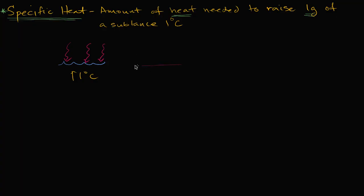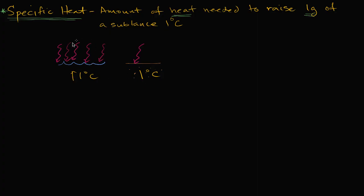Let's say this is sand right over here. If I want to raise that one degree Celsius, I would need a different amount. It actually turns out that I need less heat to raise the sand one degree Celsius than I need to raise the temperature of one gram of water one degree Celsius. So let's say this is a gram of water, and this is a gram of sand — I'm going to need more heat to raise the water one degree Celsius than to raise the sand.